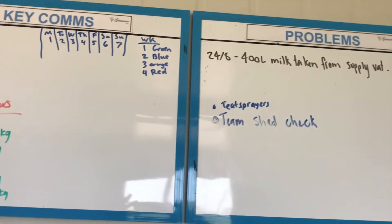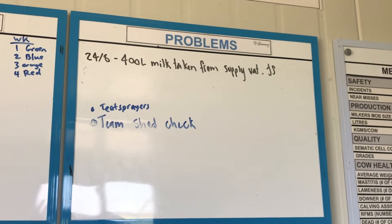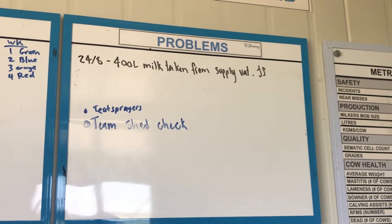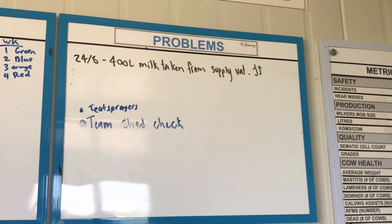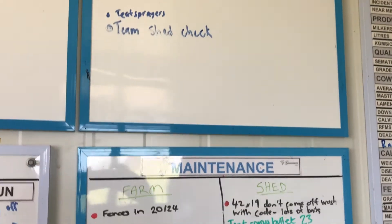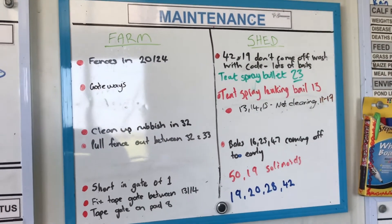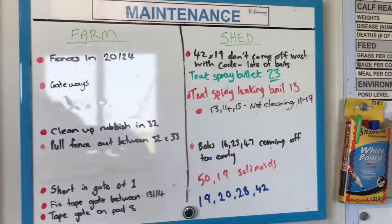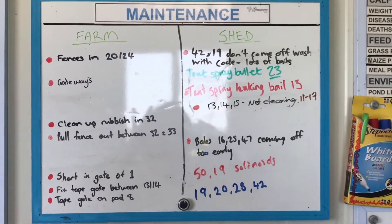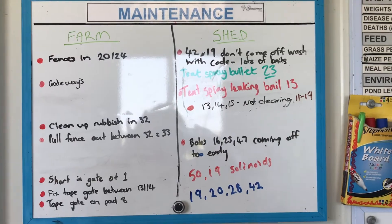We also have a little section here called problems, and that's supposed to have all the key problems that are happening on farm. We then have a maintenance section. As you can see, the team split it up into farm and shed, so this is all the maintenance things that are outstanding that we need to focus on.